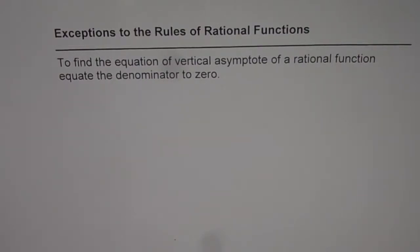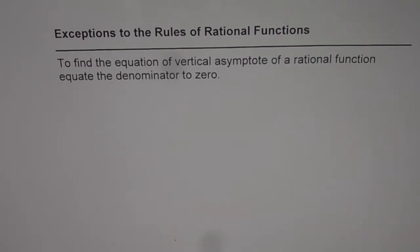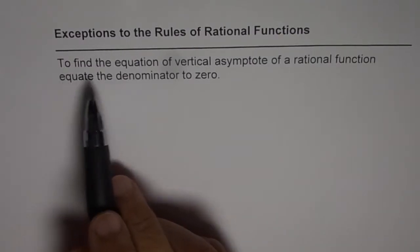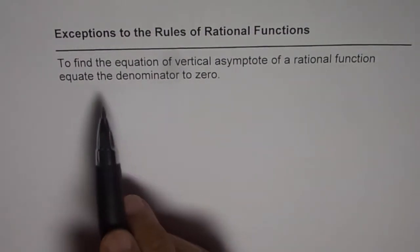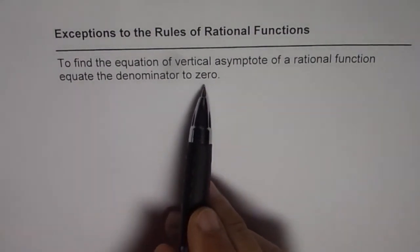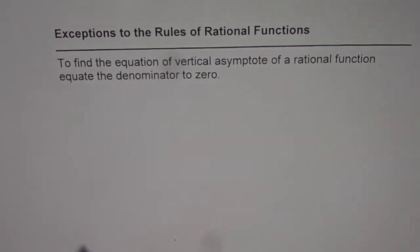Now, let us look into the exception to the rule of rational functions relating to vertical asymptotes. To find equation of vertical asymptote of a rational function, equate denominator to zero. Well, that is the process of finding vertical asymptote, but this should be used very cautiously.